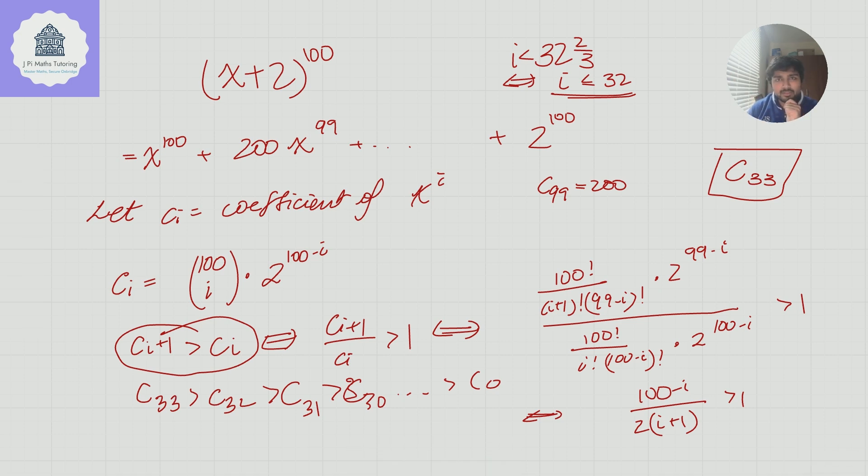How do I know that c_33 is bigger than c_34 and c_35 and c_36 and so on? Well, the idea here is this inequality must not be true when i is bigger than 32. And so, in other words, c_{i+1} must be less than c_i if i is at least 33. And the idea here is basically if I just reverse this inequality, all these if and only ifs I did over here, those would just be reversed. And I'd end up with i is bigger than 32 and two-thirds. So i would have to be at least 33. That's the idea.